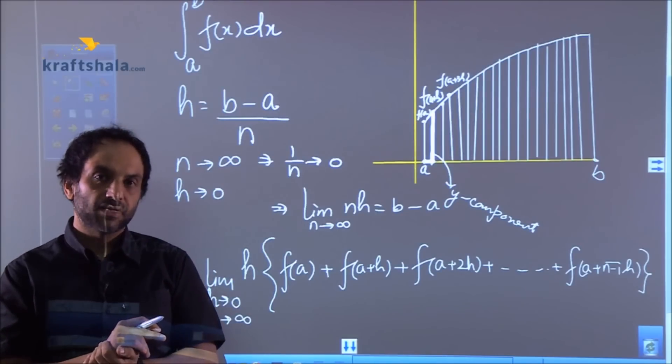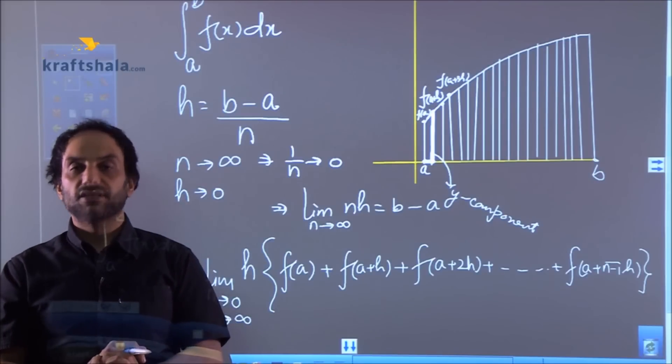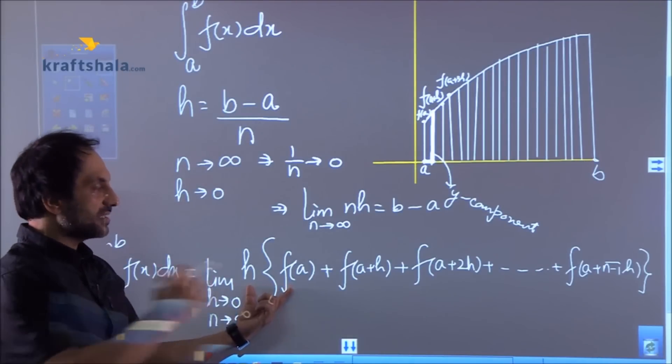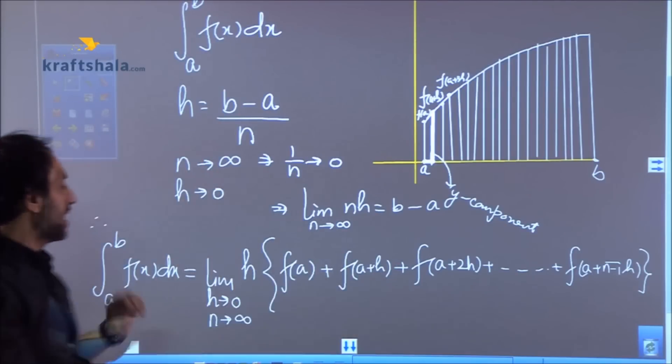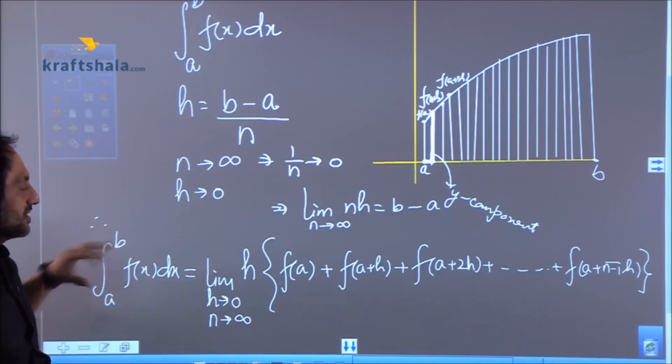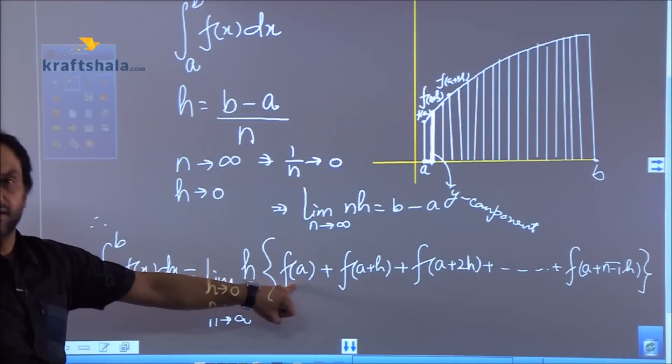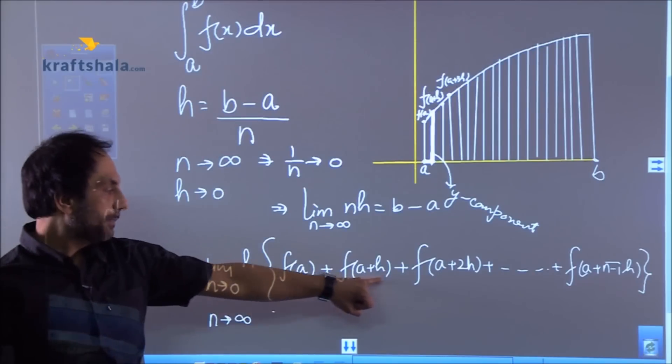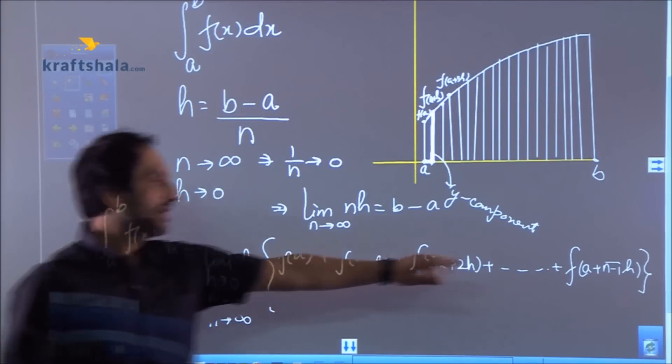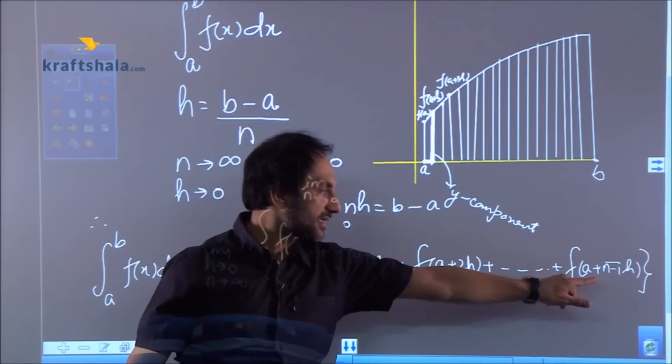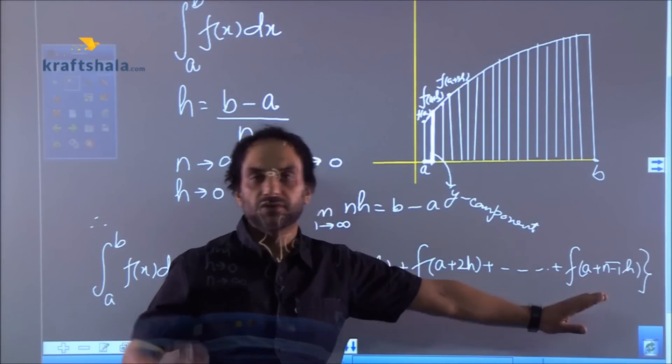And you must know that integration is nothing but the summation. So we are just summing up the areas of the rectangle. And this is how the formula for limit of a sum came. a to b f(x)dx is also taken as h times f(a), the first rectangle, a plus h, the second rectangle, and we are going up to n rectangles.